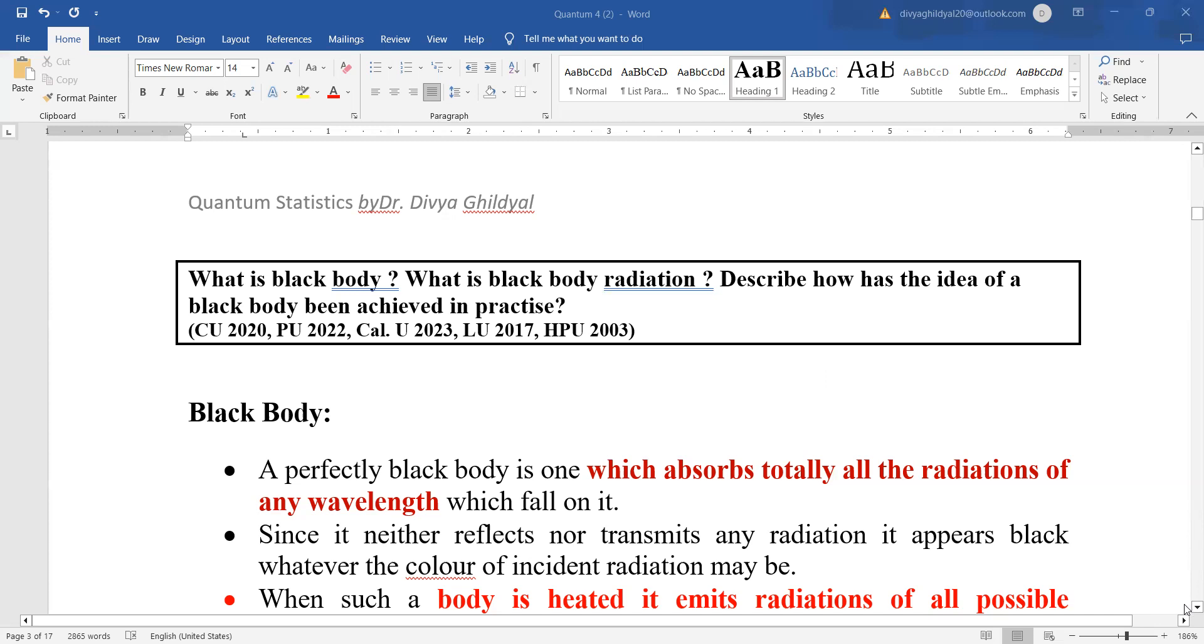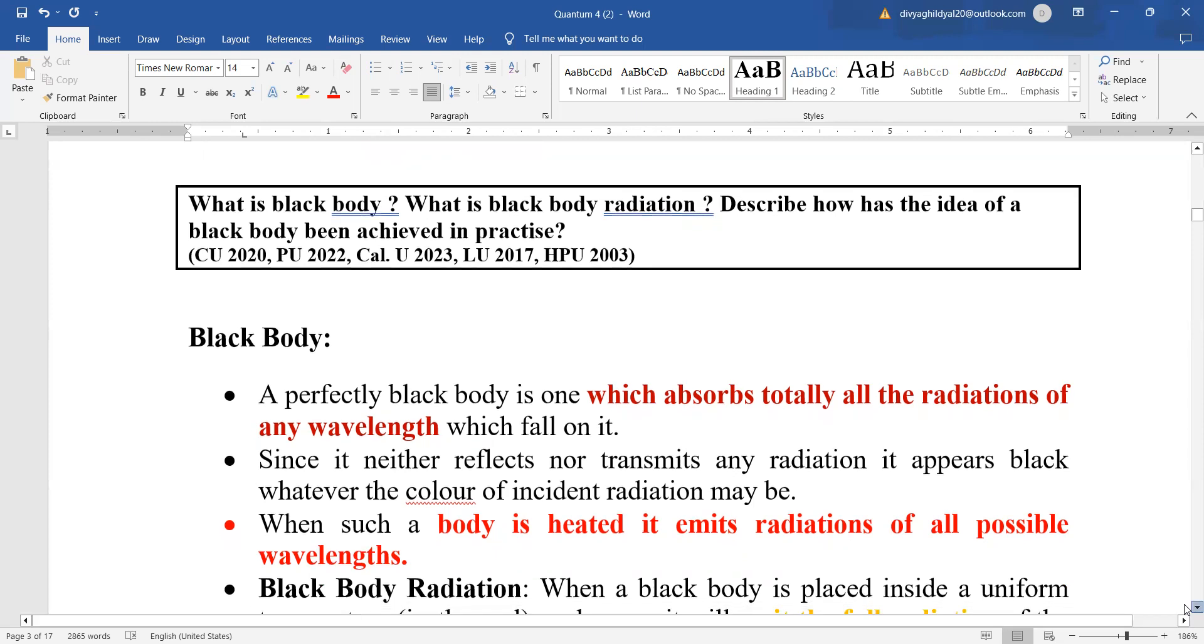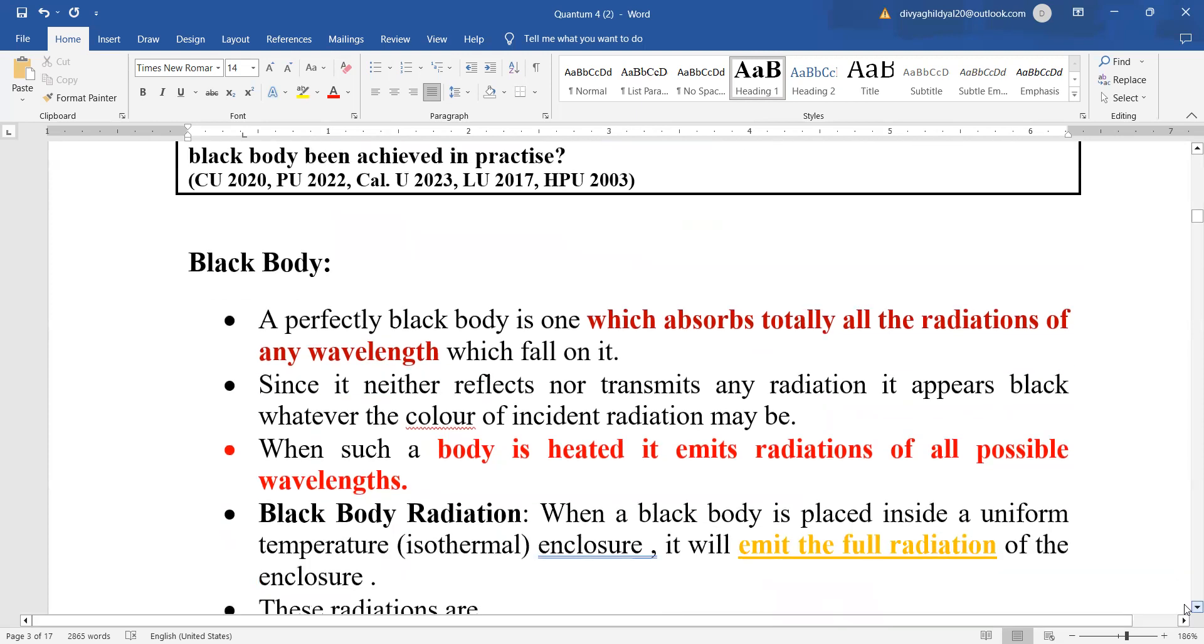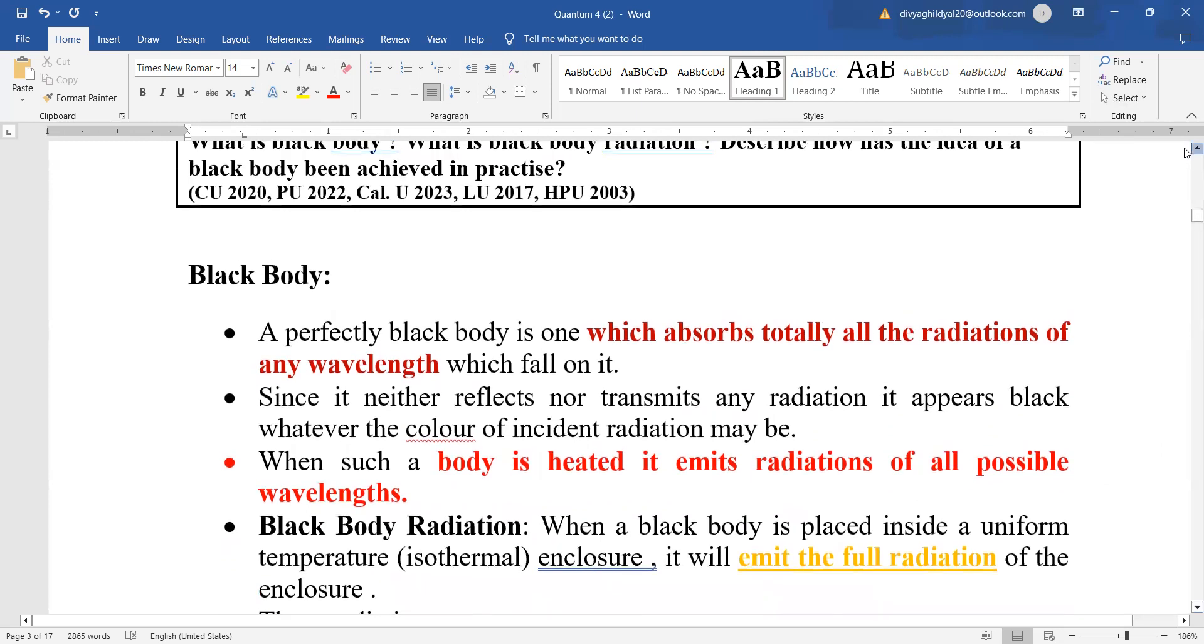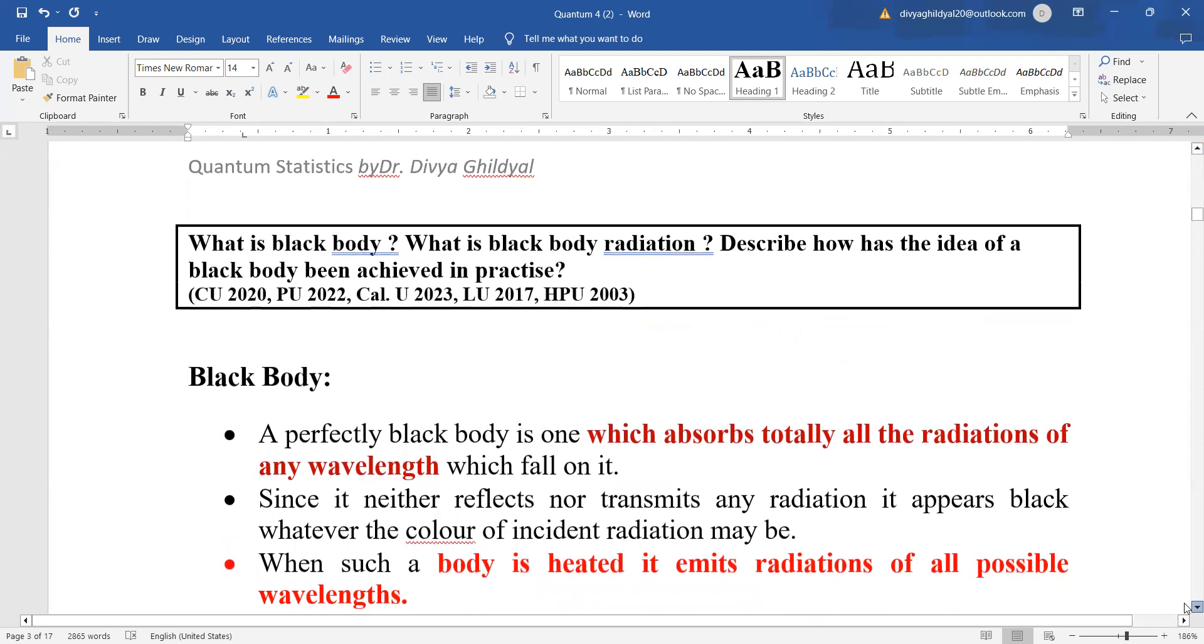What is black body radiation? When a body is heated, it emits radiations of all possible wavelengths. When you keep such a black body in a uniform temperature enclosure, it will emit radiations which are dependent on temperature. Remember that they are dependent on temperature.